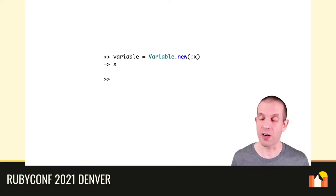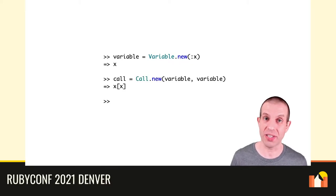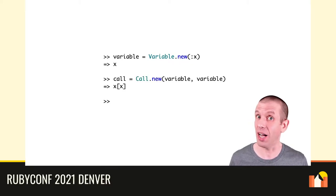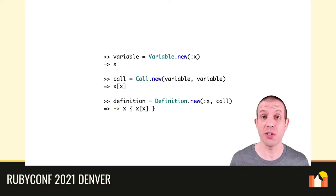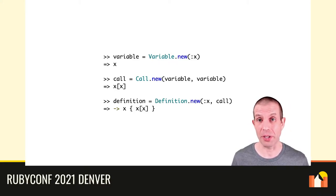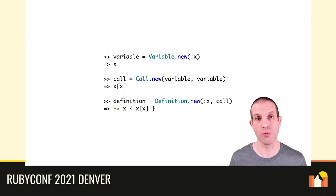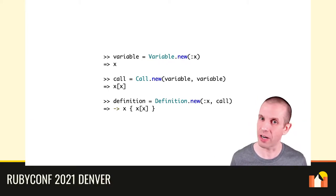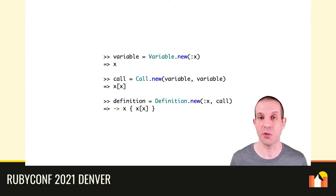A variable just has a name, a call has a receiver and an argument, and a proc definition has a parameter name and a body. To make these structs easier to work with, we can implement the inspect method on each class so their instances get formatted nicely when we look at them in IRB. Now we can make a new variable whose name is x, or a new call whose receiver and argument are that variable x, or a new definition whose body is that call. They look superficially just like the real thing, because those inspect methods format them to look like Ruby source code. But they're not real variables or procs — they're structures made out of objects whose behaviour we control.